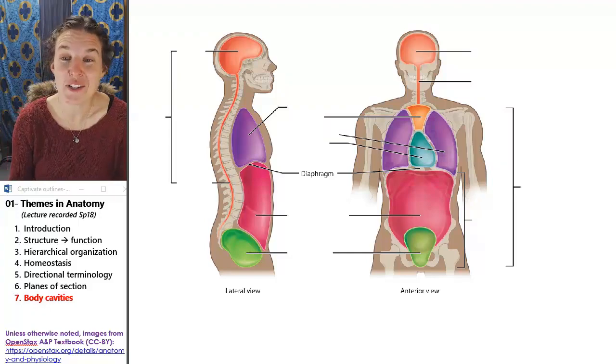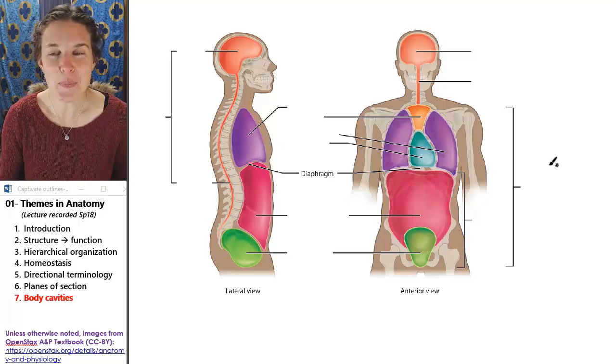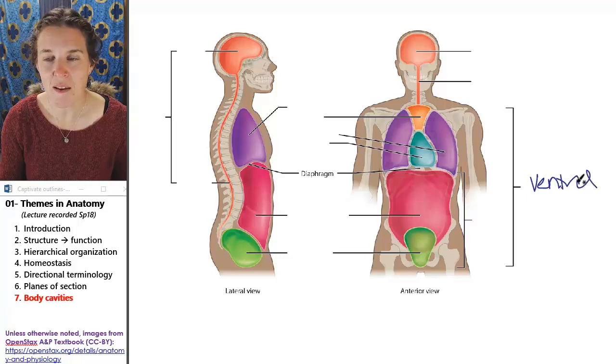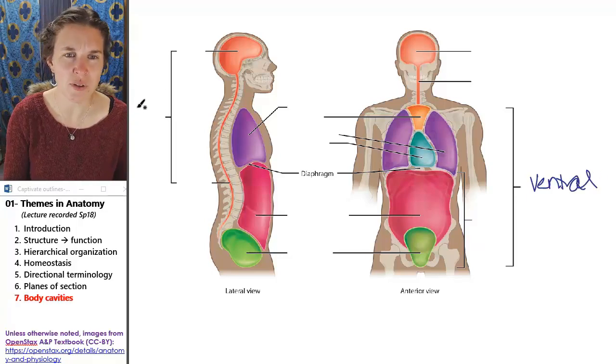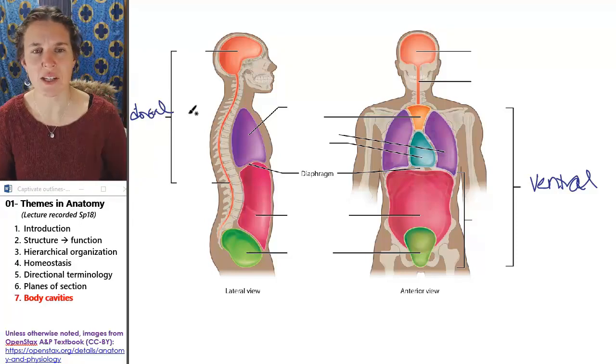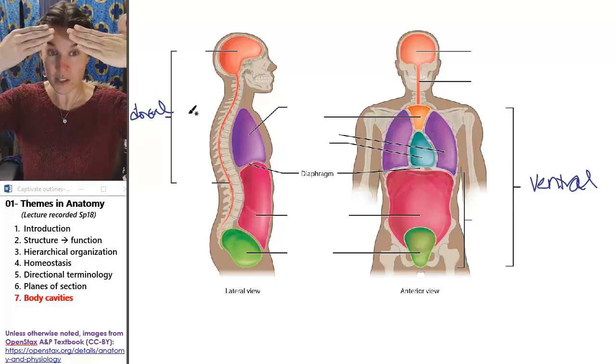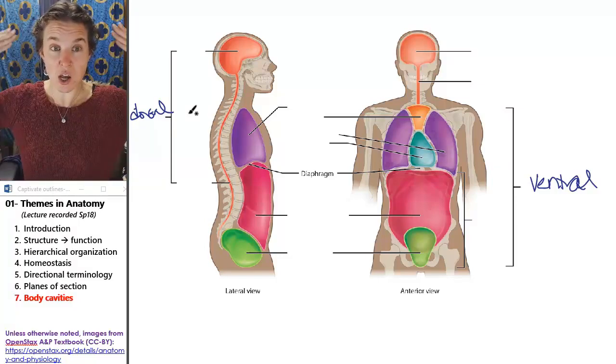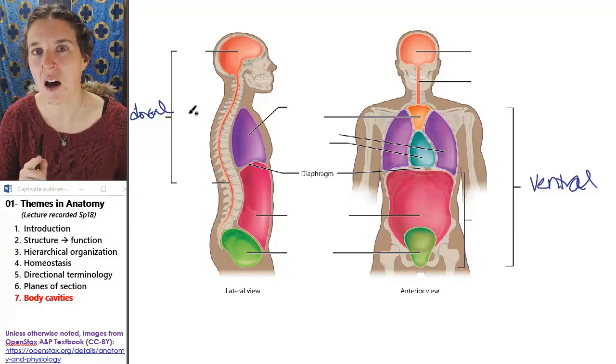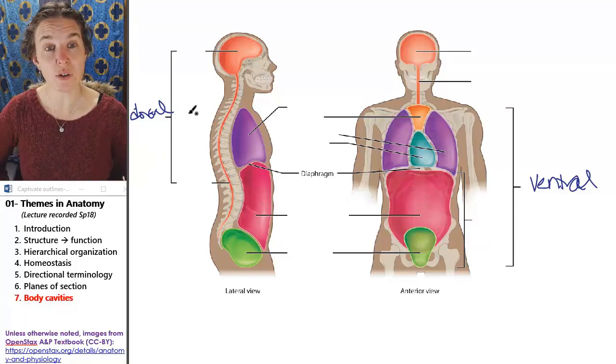First of all, I'm going to do some big picture cavities. Big picture, we have a ventral cavity. I didn't tell you what ventral meant. And we have a dorsal cavity. Ventral is on this side. Dorsal is on that side. Dorsal is like the dorsal fin of a fish, so it's on the back side. Ventral is belly side.